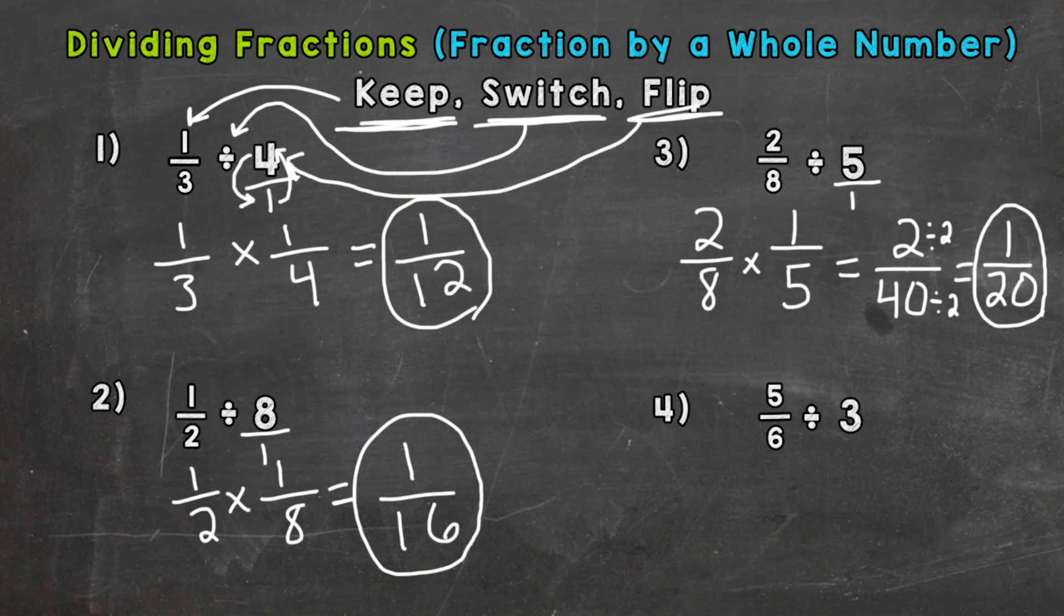Number four, five-sixths. Keep, switch, and then we need to flip to one-third. And we're good to multiply straight across now. Five times one is five. Six times three is eighteen. The greatest common factor between five and eighteen is one. So there isn't any number that we can divide both the top and bottom by to break this down any further. The answer is in simplest form already. So five-eighteenths.